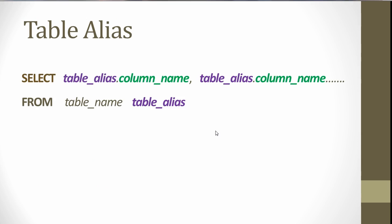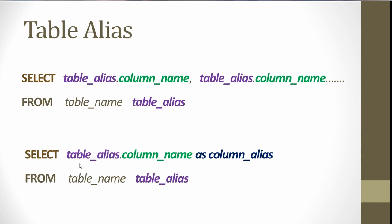For the table alias, we have FROM table_name and then an alias. Each column can be prefixed by the table alias followed by a dot - there are no spaces, so it's table_alias.column_name. You can do this for every single column in the SELECT statement. The purpose of a table alias is much more useful when you have two or more tables, so it will become more clear in the next few lessons when we handle joining of tables.